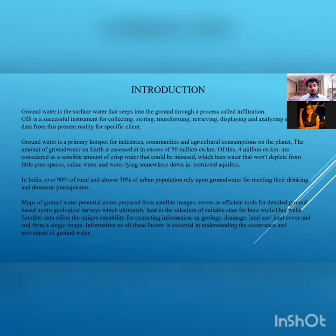As we all know, humans have been facing acute water shortages for a very long time. There might be confusion that even though three-fourths of the earth is covered with water, how is there so little water to be used? Only 1% of this water can be used, and it is only available in glaciers, rivers, lakes and rain. But there is one more source very close to us, used for centuries — that is groundwater.